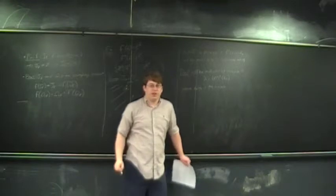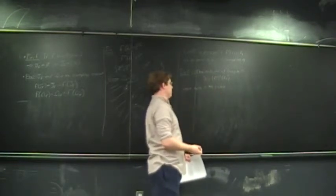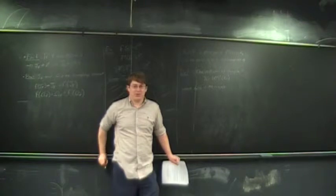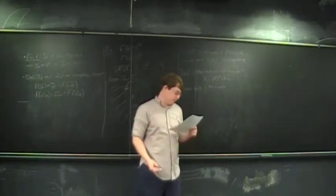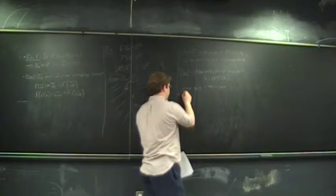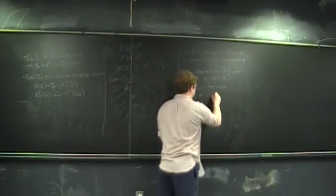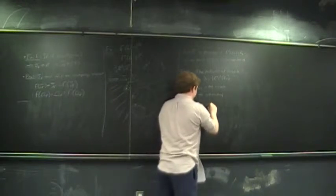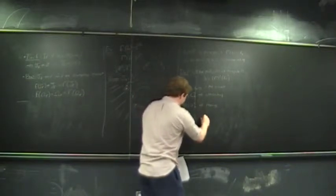We define the multiplier of an n-cycle, which is λ = (fⁿ)'(z₀), where z₀ is a point in the cycle. This definition seems to depend on the choice of z₀, but it doesn't — by the chain rule, this derivative has the derivative of f at each point encoded, and you can show the value is independent of the choice. If |λ| < 1, the cycle is attracting. If |λ| > 1, it's repelling. If |λ| = 1, it's indifferent.